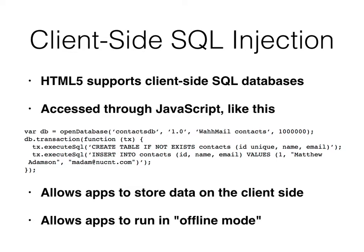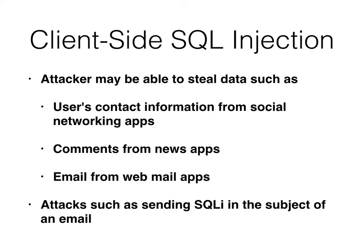The point is you can now store data on the client side — run your app in offline mode with a database that updates when you connect and synchronizes again. So now we can steal everything from you. All I have to do is upload data with a POST. When you download it into your local database, it'll inject SQL and steal the data out of it. Whatever you've got in that database, they can steal it.